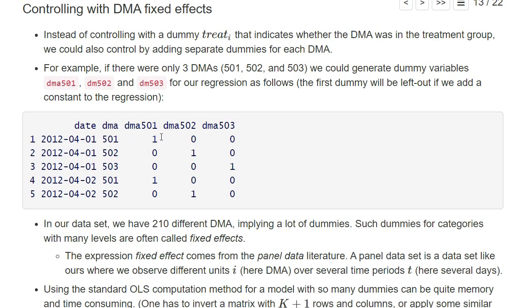For example, this dma501 variable is only one for the rows that are associated with DMA 501. So for the first day for DMA 501, it's one, and then when we have the row for DMA 501 in the second row, this variable is again one, and otherwise it's zero. Similarly, we have the dummy variables for the two other DMAs. So in each row, exactly only one of these DMA dummies is equal to one and all the others are equal to zero.